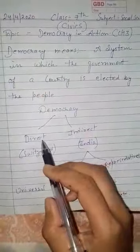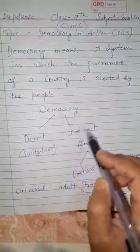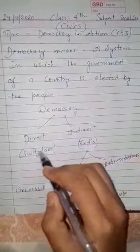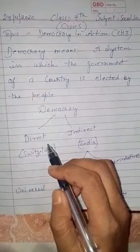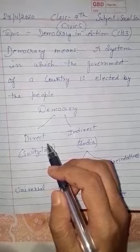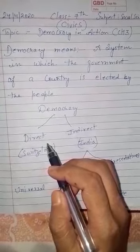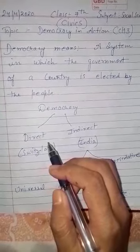Democracy is divided into two types: direct democracy or indirect democracy. For direct democracy, we have the best example of Gramsabha, where the villagers come together and take decisions for themselves.